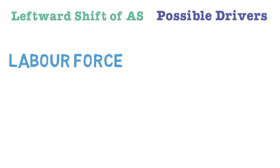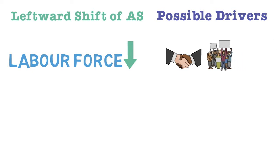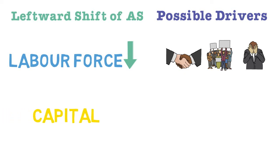Moving to a negative shock on the supply side — a leftward shift of the aggregate supply curve — we look at the same determinants differently. If labor supply decreases, possibly due to union action where strong unions increase the wage level and cause structural unemployment, or due to discouraged workers who can't find a job and drop out of the labor force, all of these would cause the aggregate supply curve to shift leftwards.